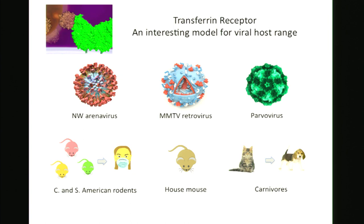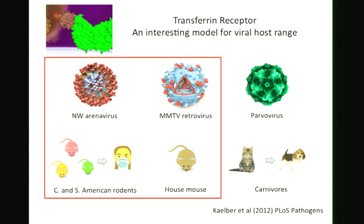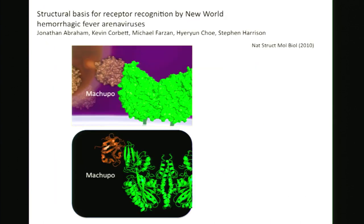I've been working on the host range of parvovirus infection with Colin Parrish at Cornell University and we just published that work. Today I want to tell you about these rodent viruses that use transferrin receptor. Mike Farzan, Harry and Che, and Steve Harrison at Harvard Med produced a co-crystal structure of transferrin receptor in complex with the viral surface protein of one of these zoonotic rodent arena viruses, Machupo virus. A co-crystal structure is about the most sophisticated piece of biological information you could hope to have for a host-virus interaction.